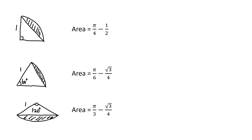First, it's a 45-degree right triangle with a one-fourth circle. For example, if the radius is one, the area of the one-fourth circle is pi over four, and the area of the triangle is one-half. Usually they will ask you what's the shaded area, so it's pi over four minus one-half.